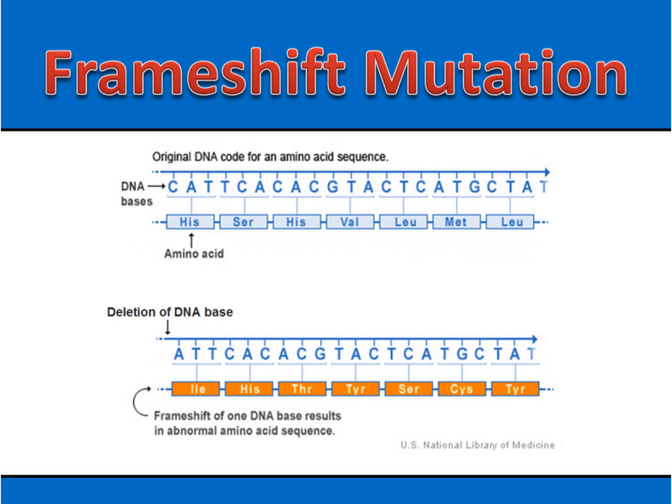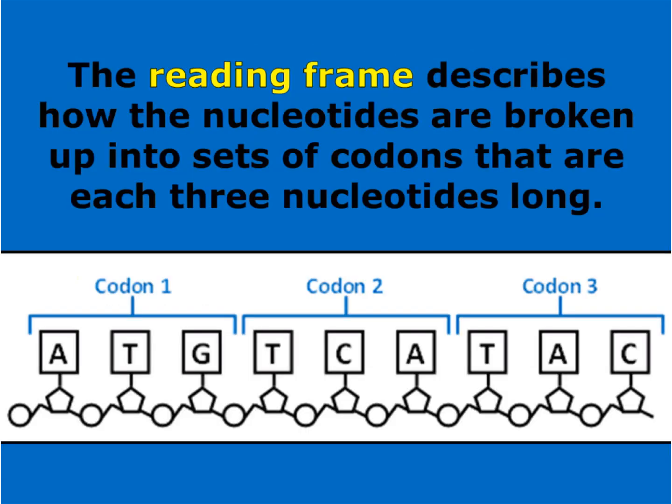A frameshift mutation is when an insertion or deletion causes a disruption in the reading frame. The reading frame describes how the nucleotides are broken up into sets of codons that are each three nucleotides long. Each codon codes for one amino acid in a protein.